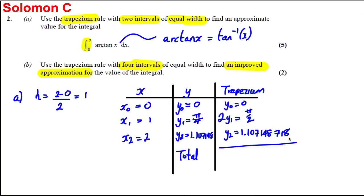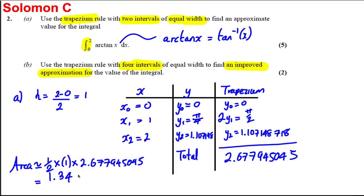So I'm going to add those up, plus pi over 2 and plus 0. And I get myself a total of 2.677945045. And therefore the area, an approximation for the area, is a half H. So it's a half times H, which is 1, times this total of 2.677945045. And if you work that out, you get yourself 1.34 to 3 significant figures. And we're done. 1.34 to 3 significant figures.